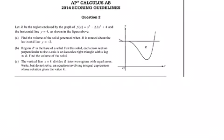Okay, let's look at B. Region R is the base of a solid. For this solid, each cross-section perpendicular to the x-axis is an isosceles right triangle with a leg in R. Find the volume of the solid.